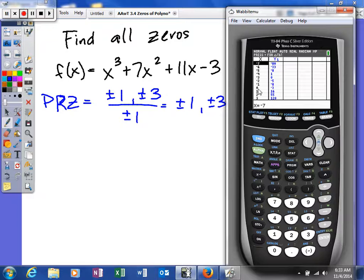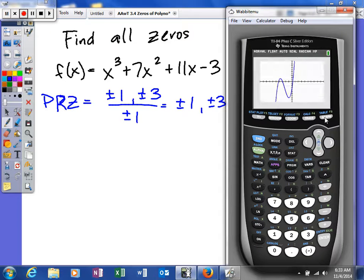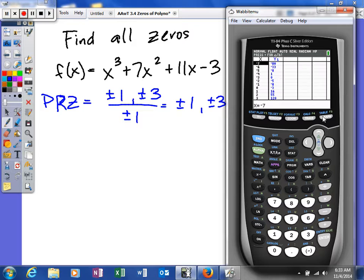And that's evident when you look at the graph. But the good thing about the table is we actually found one of our zeros, negative 3.